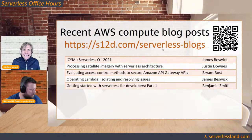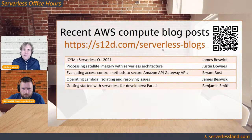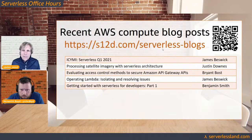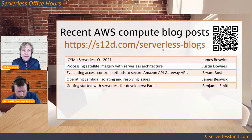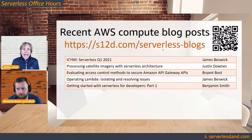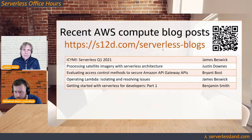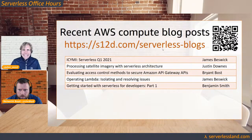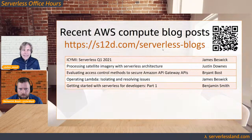Some simple use cases: processing satellite imagery with serverless architectures by Justin — that's a good one. And if you're into API Gateway, evaluating access control methods to secure Amazon API Gateway APIs — really useful, looking at different access control methods and how you can potentially use them. James Beswick is doing an amazing series on operating Lambda called the Operating Lambda Guide, being released partly in documentation and partly as blog posts. Yesterday James released 'Operating Lambda: Isolating and Resolving Issues,' which is more about troubleshooting to find out what's going on.